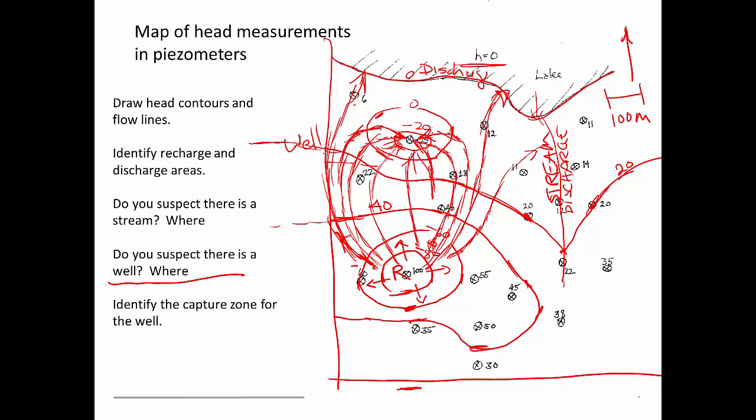So what I get out of this is that just by contouring up these points and drawing the head contours, I can then go and draw in flow paths. And what I see is that there is a region like this. It's kind of a heart-shaped region. There's a region where all of the recharge ends up going to the well. There would be a flow line that actually curves around right in here. This region is the capture zone for the well.